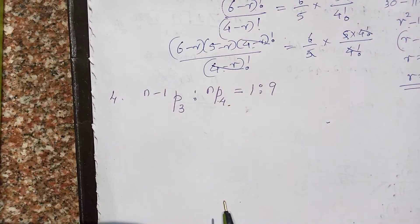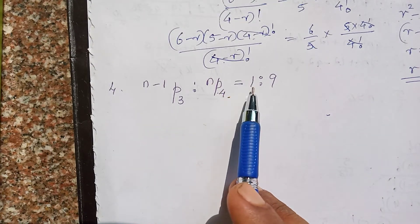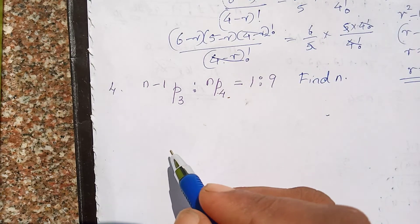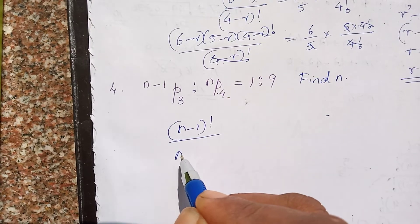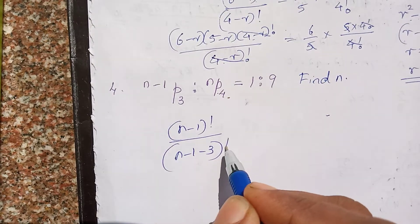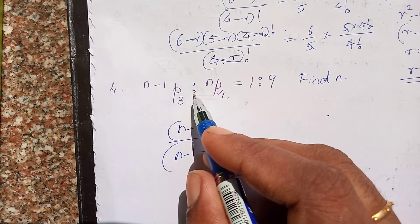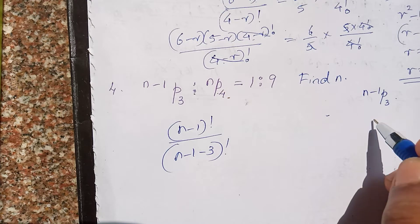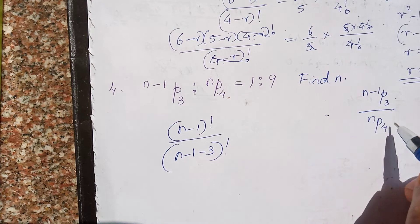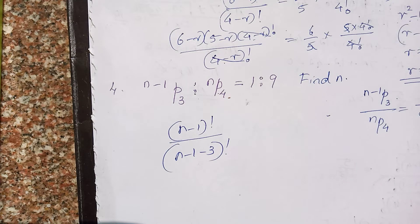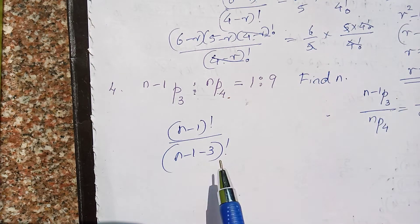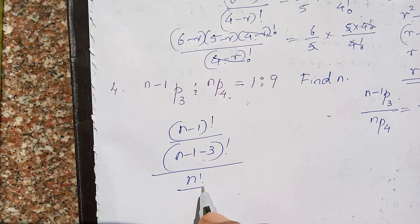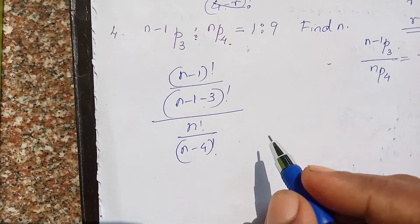Now finding another question: find n if (n-1)P3 by nP4 equals 1 by 9. Using the formula, (n-1) factorial by (n minus 1 minus 3) factorial, and nP4 equals n factorial by (n minus 4) factorial. So (n-1)P3 by nP4 equals 1 by 9.